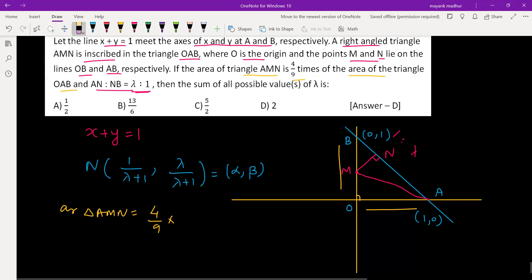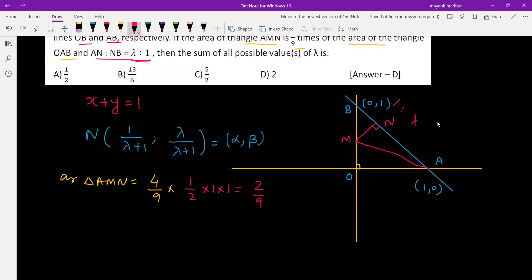Area of triangle AMN: we have N's coordinate, A's coordinate is 1 comma 0, M's coordinate is 0 comma k. Using the area formula, it is one half times x1 times y2 minus y3, plus x2 times y3 minus y1, plus x3 times y1 minus y2.